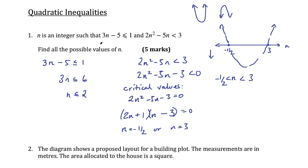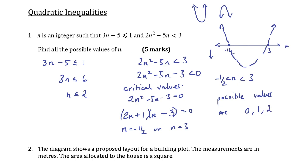Going back to the question, n is an integer that satisfies both inequalities. We need n ≤ 2 and between -½ and 3. The integer values that satisfy both are 0, 1, and 2. It can't be 3 because n is only less than 3, not less than or equal to 3. Final answer: 0, 1 and 2.